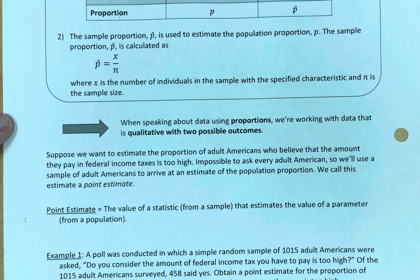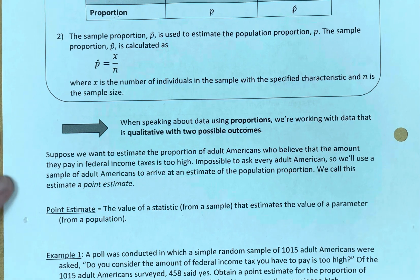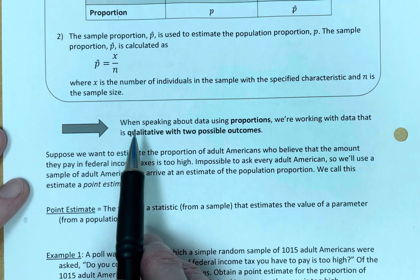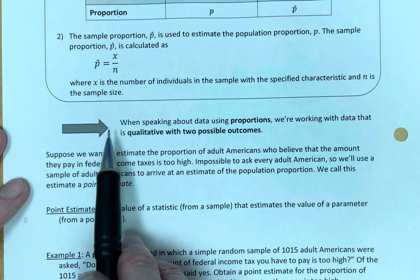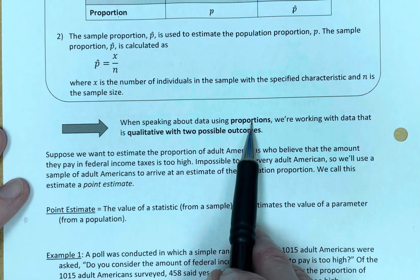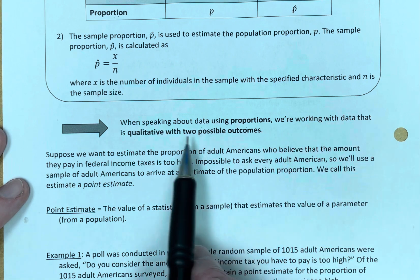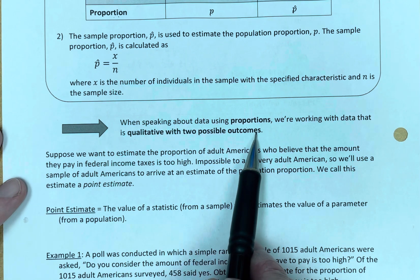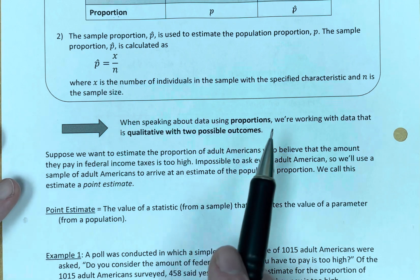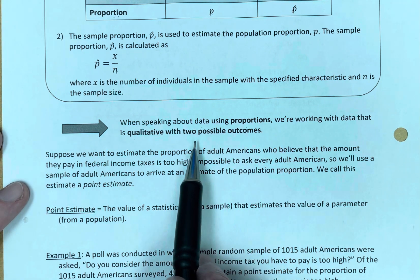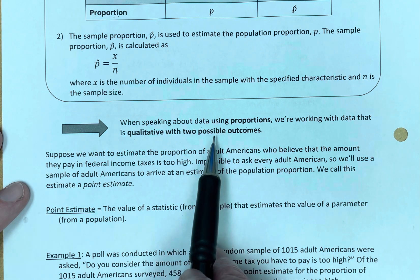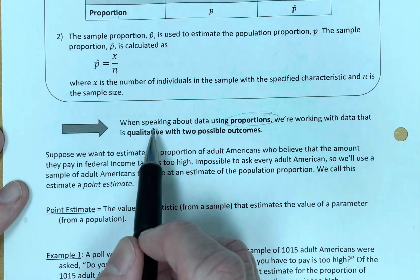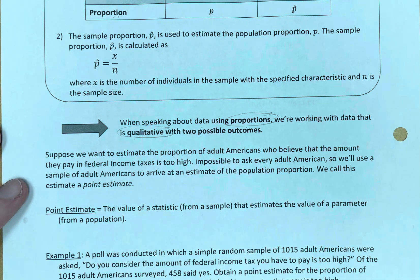We need to define point estimate, but let's speak to a couple of other things first. We're going to be dealing with population proportions in the next couple of lectures. When we're speaking about data using proportions, we're working with data that is qualitative and has two possible outcomes — agree/disagree, yes or no type data. So proportions involve qualitative data with two possible outcomes.